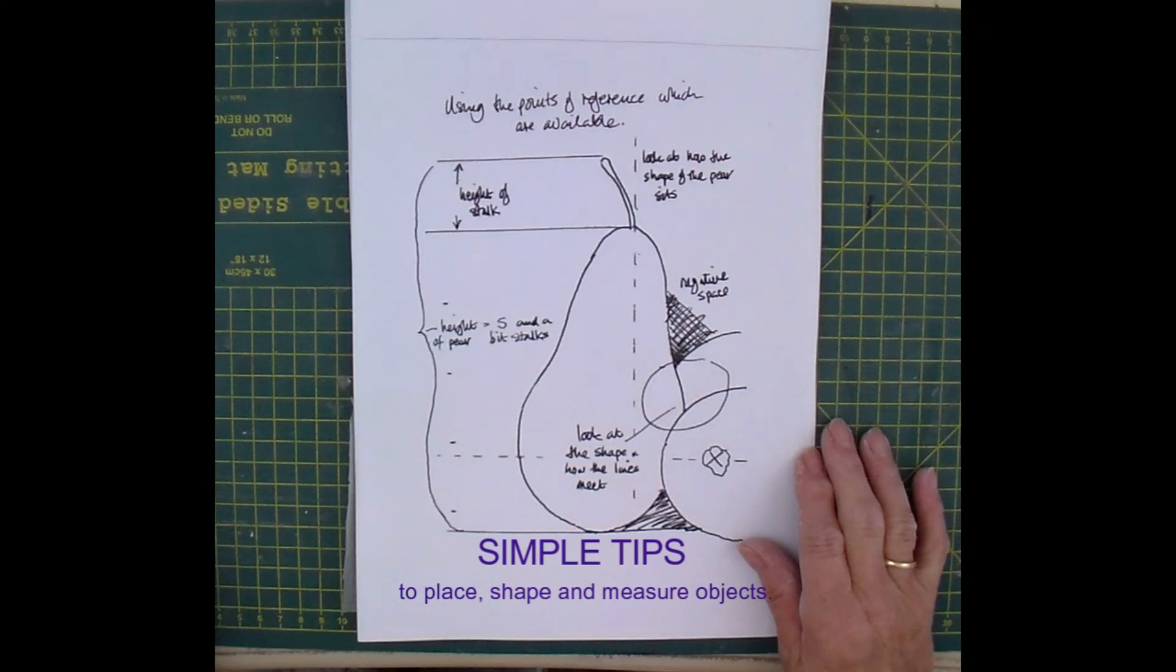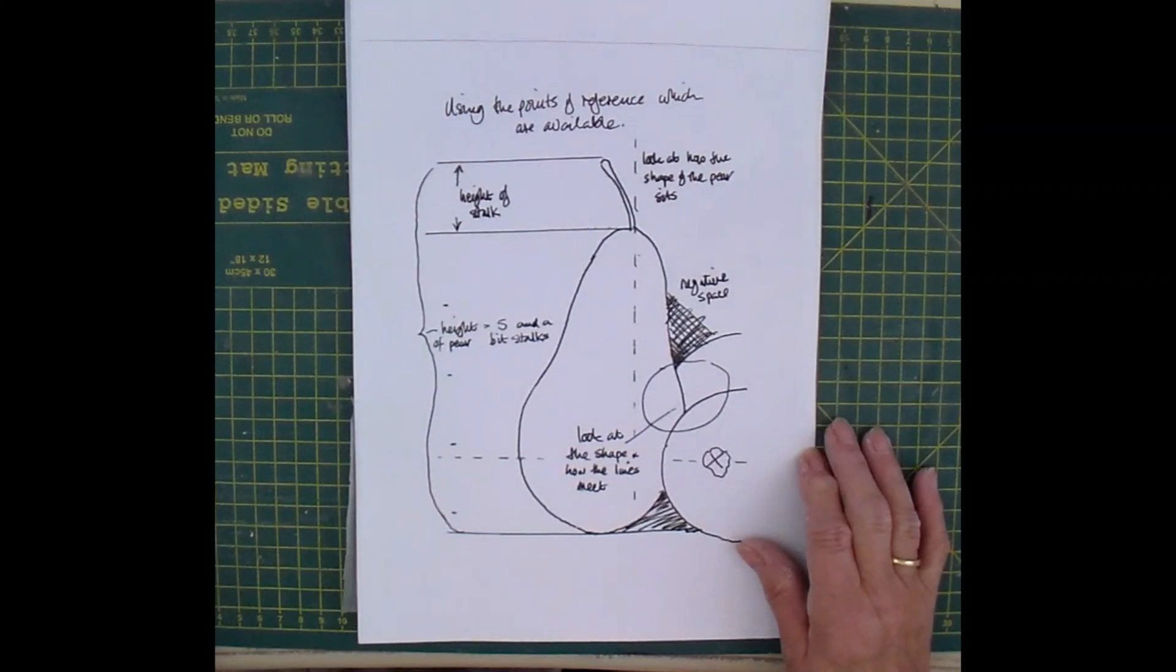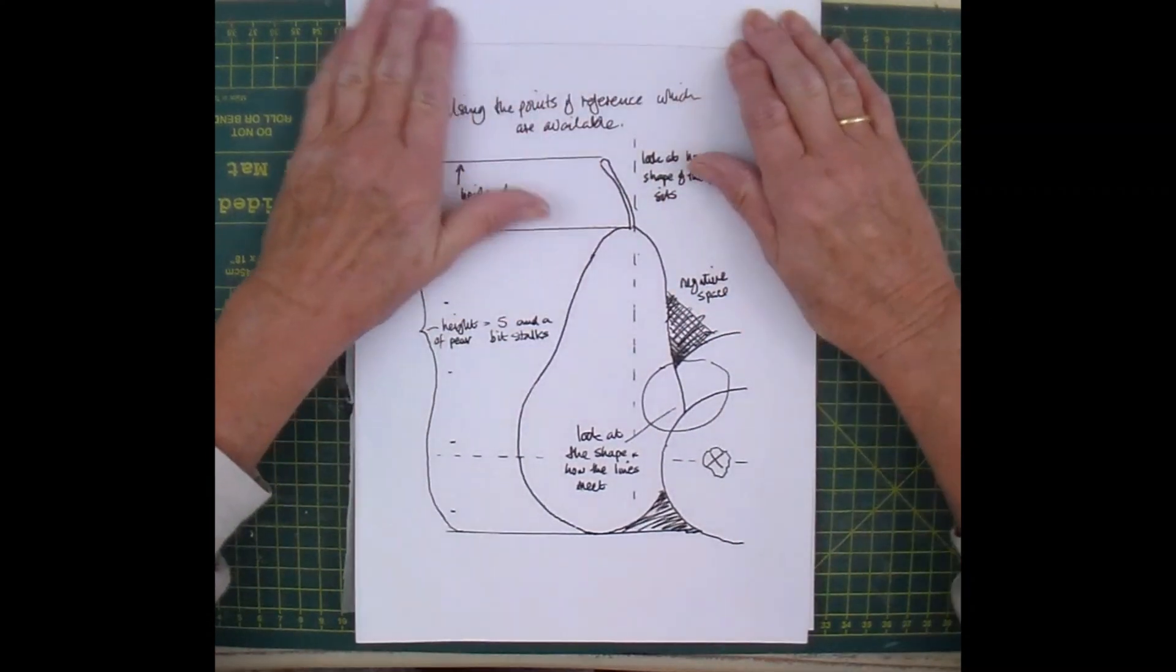A few things to help you when you are looking at anything, a building or a still life, and you're trying to place things and find measurements and all sorts of things. Here's a simple way of looking at it.